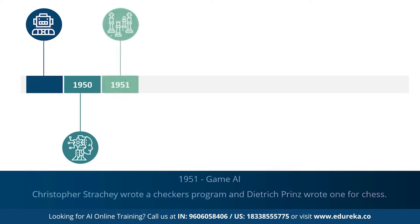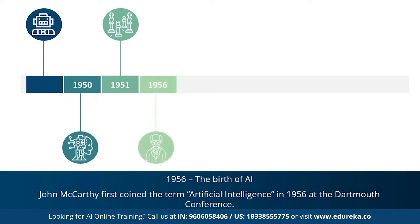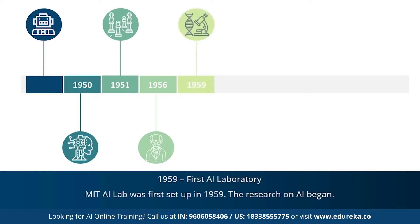1951 marked the era for game AI, where computer scientists developed programs for checkers and chess, which were later rewritten in better ways. 1956 marked the most important year for artificial intelligence — John McCarthy first coined the term artificial intelligence. This was followed by the first AI laboratory, the MIT AI lab, set up in 1959, dedicated to the research of AI.